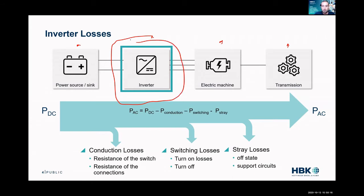If we look at the path of power for the inverter, we have DC power in — this is coming from the battery — going through the inverter, and then we have AC power out. Our efficiency is going to be AC power over DC power, but along the way we're losing some of that energy.